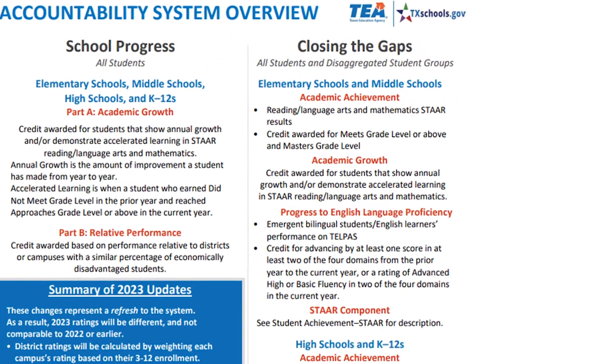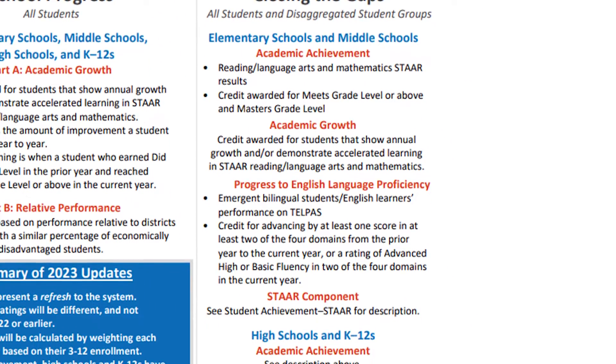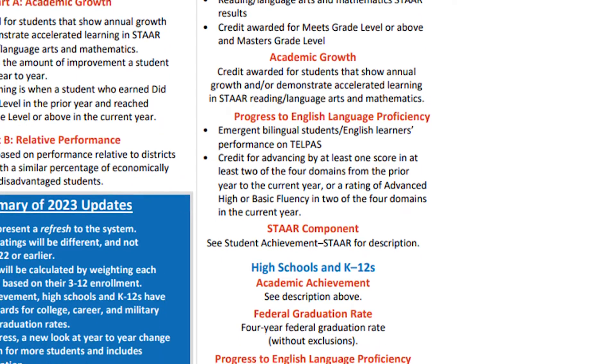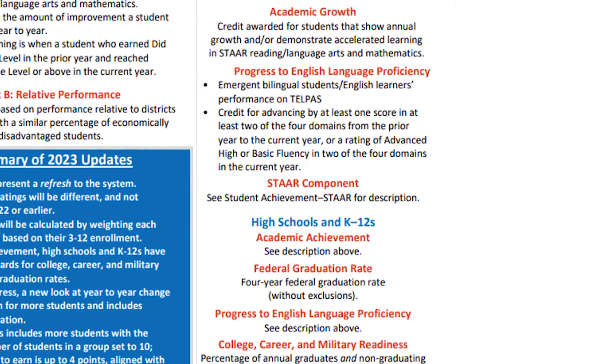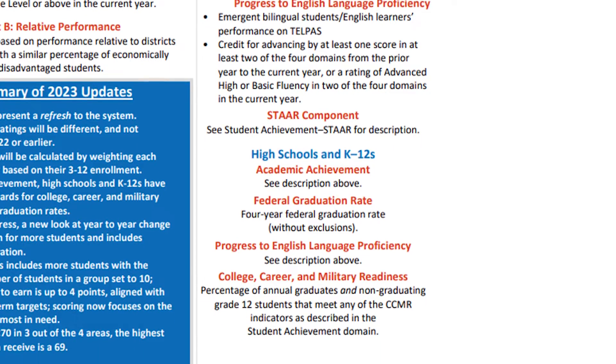The domain analyzes data and measures how public schools are succeeding in closing learning gaps among racial or ethnic groups, economically disadvantaged populations, and other factors. The Texas Education Agency is making substantial changes to the accountability system, and Domain 3 is one of the areas with the largest adjustments.